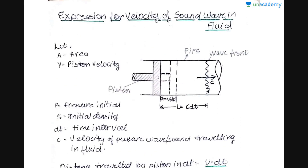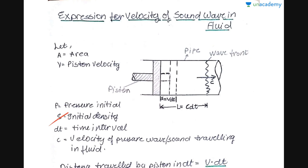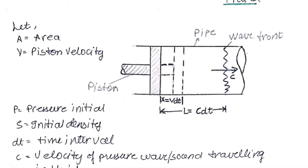Now we will derive the expression for the velocity of a sound wave in a fluid. We consider a small cylinder fitted with a piston. Let A be the area of the cross-section, V be the velocity at which the piston moves, and P be the initial pressure at this section. Let rho be the initial density and dt be the small time interval. Initially the piston is at one position, and with some force it moves to a new position. The distance moved by the piston is x = v · dt, where v is the piston velocity.